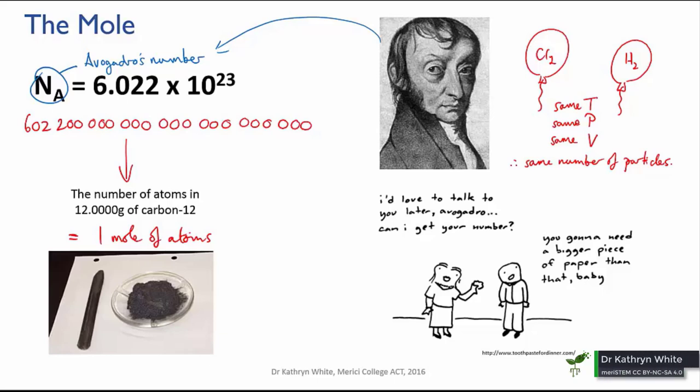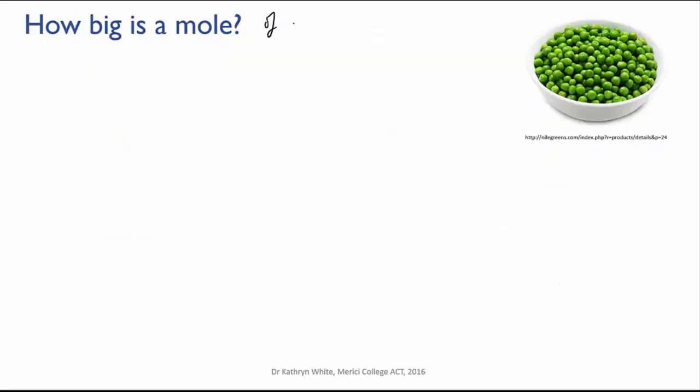All right, so there's a mole of atoms—that's 6.022 times 10 to the 23 atoms in 12 grams of carbon-12, which is a small handful of soot. But just for the sake of it, how much room would a mole of something larger take up? Let's say a mole of peas.